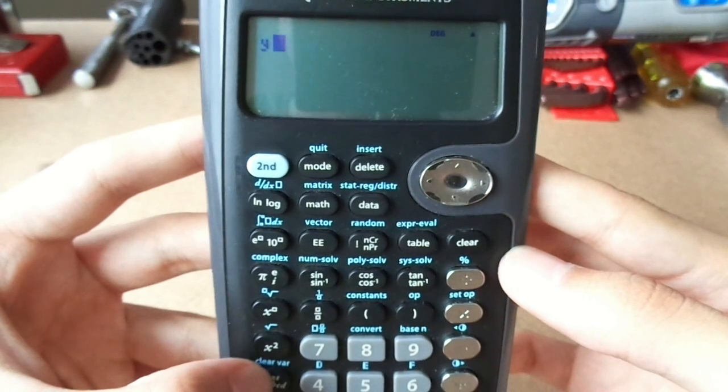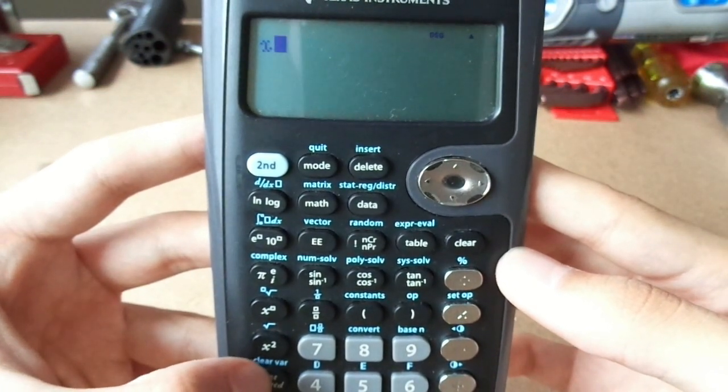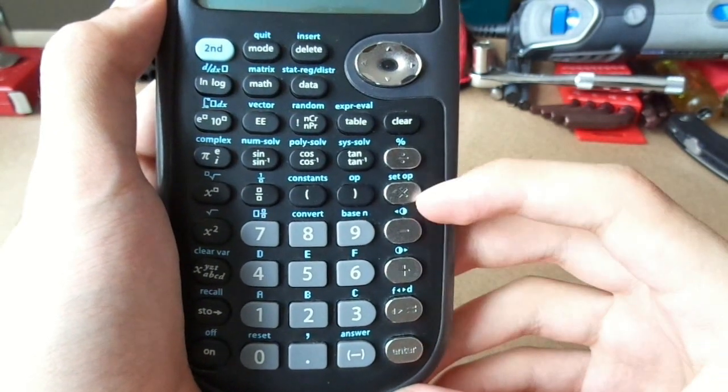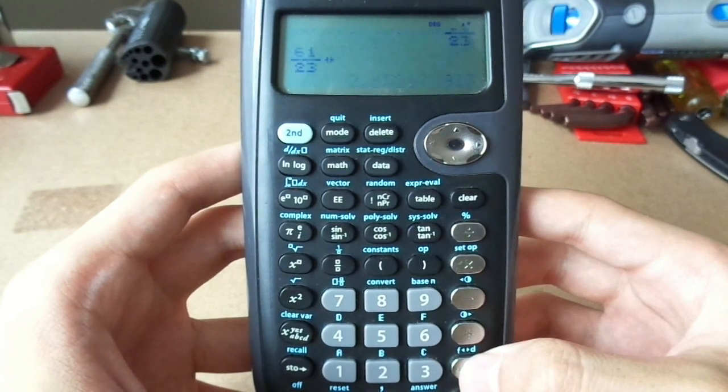The calculator comes equipped with eight variables to choose from. A column of metallic looking keys are included for a great CDI factor. The fraction to decimal button is a pretty awesome feature.